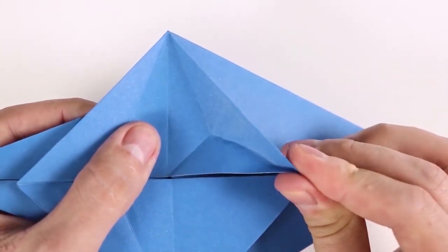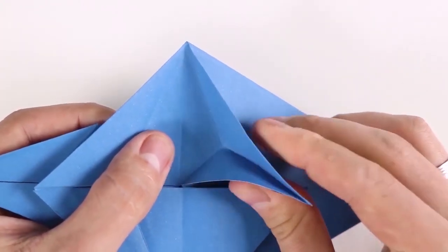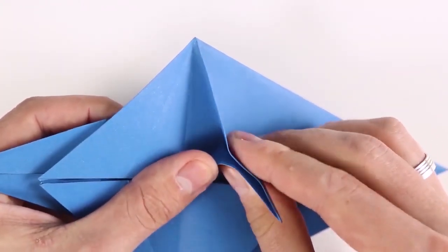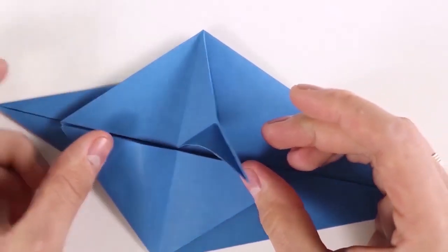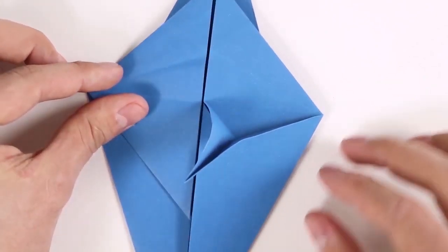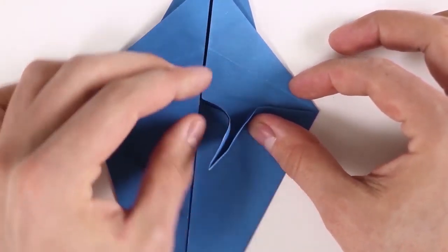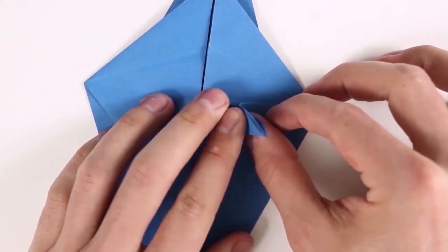And using the two creases, close the flap, creating a new line that connects the corner to the intersection. Now, using the three lines, bring the end to the corner. That way.